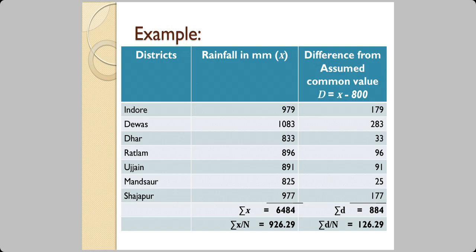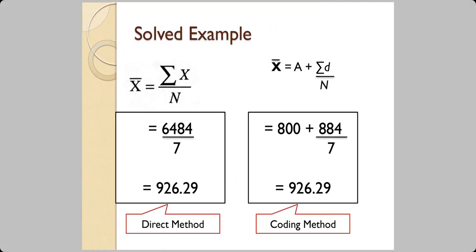By the first method, you do the summation of all the values — that is ΣX = 6484 — and because there are seven values, 6484 divided by 7 will be your mean. In the indirect method, also known as the coding method, the number 800 mm is common everywhere, so we subtract 800 from every value. For example, 979 minus 800 is 179, 1083 minus 800 is 283, and so on. You add them up and get the summation of differences Σd = 884.